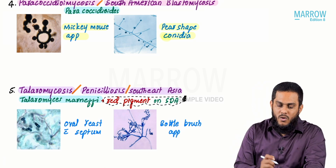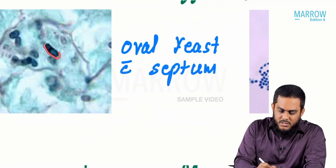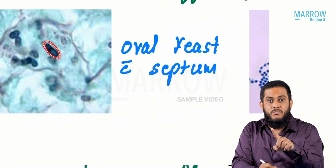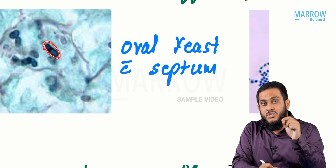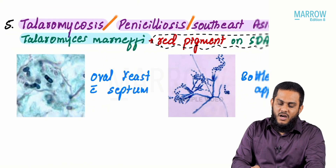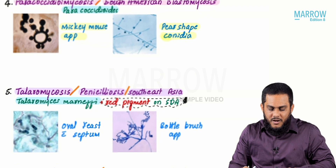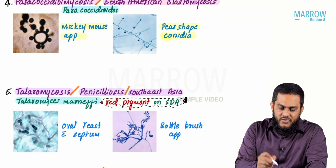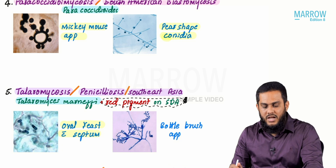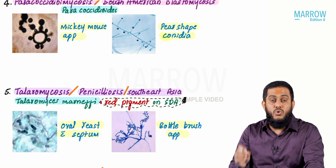The yeast form of Talaromyces marnefi shows oval-shaped yeast cells with a septum in the middle. Normally yeast cells are round; if you see an oval-shaped yeast cell with a septum inside, it is confirmed to be Talaromyces marnefi.